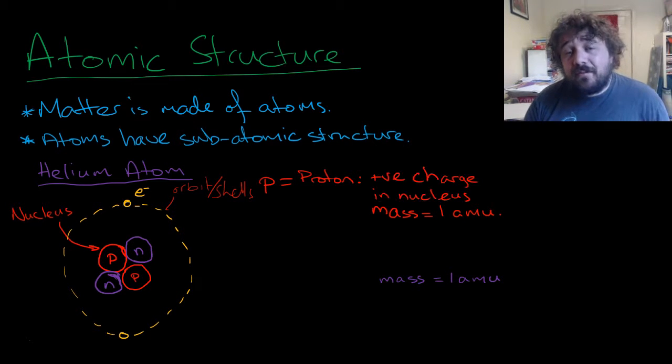Now, when we've got a proton, we're looking at something which has a positive charge. It lives in the nucleus. And its atomic mass is roughly one atomic mass unit. AMU stands for atomic mass unit.